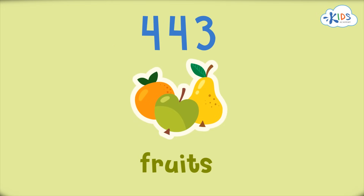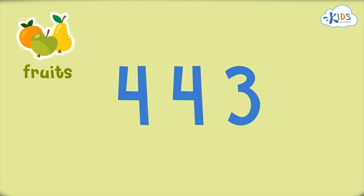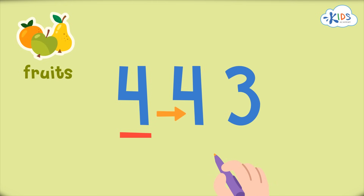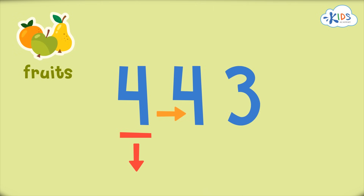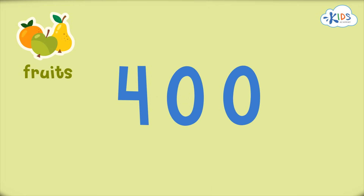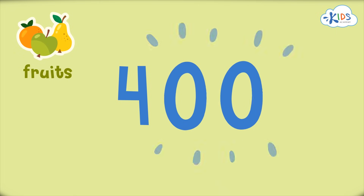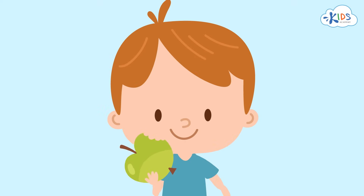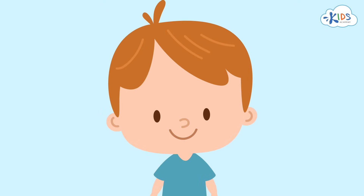First, we'll round the fruits eaten this week. According to the data, 443 pieces of fruit were eaten this week. Let's round this number to the nearest hundred. We'll use the strategy of underlining the hundreds place and drawing an arrow to the tens place so we know what numbers we have to look at. I see a four in the tens place — I know if it's four or lower, we have to round down. The four in the hundreds place is underlined, so we have to round the four in the hundreds place to 400. When rounding to the hundreds place, the numbers in the tens and ones places become zeros. Now I know about 400 pieces of fruit were eaten this week.